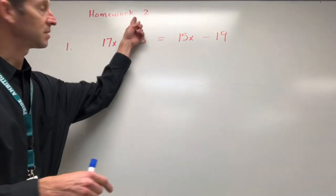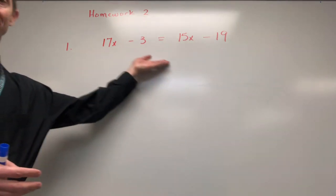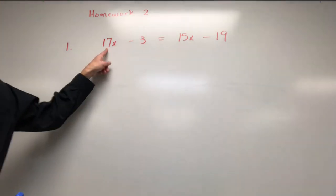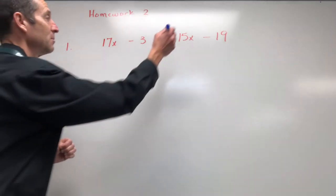Alright guys, coming at you for this second homework assignment. Got a video to help you on solving these equations. I think I got four examples for you. Let's roll. So you got a 17x and a 15x, but they're not together—on opposite sides of the equal sign.